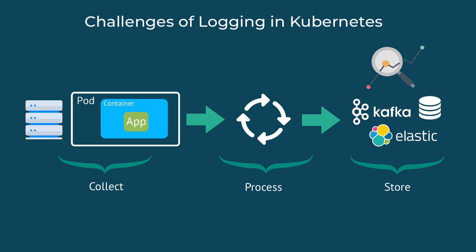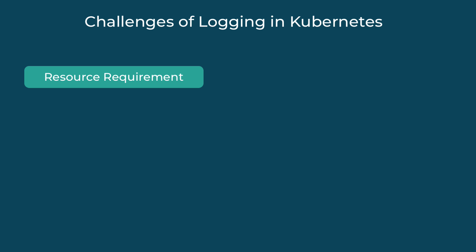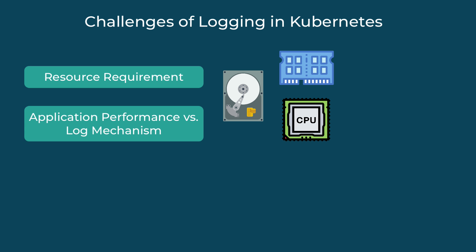As you see, the log processor has a very important but also challenging job. Processing the data needs resources — the log processor needs enough memory, storage, and CPU resources to collect the logs, then parse and filter them. And this should all be done as a background task; it shouldn't interfere with your main application's performance.